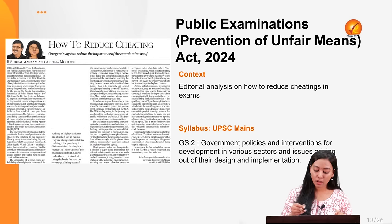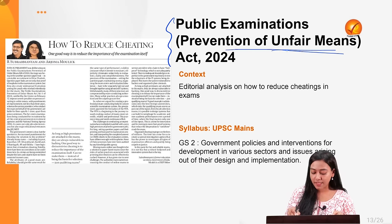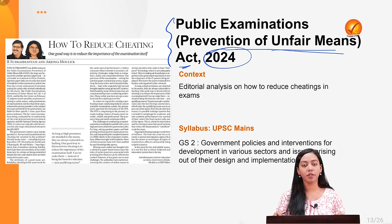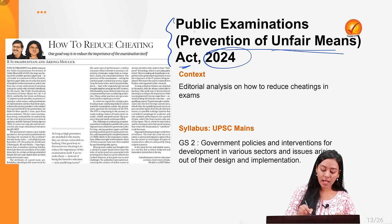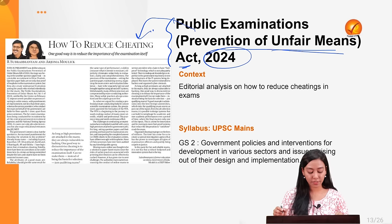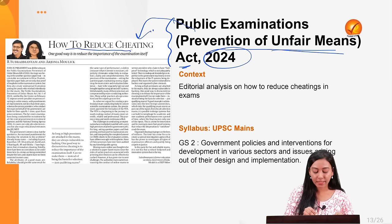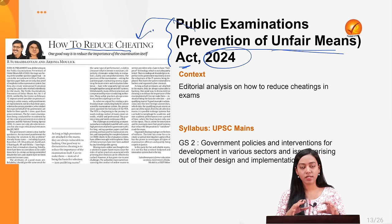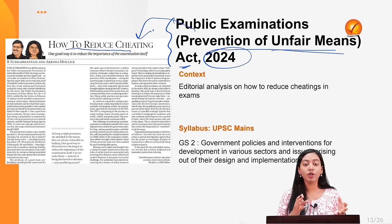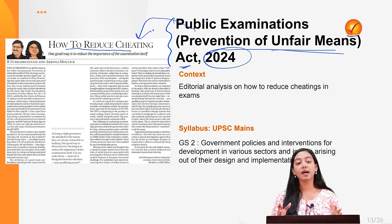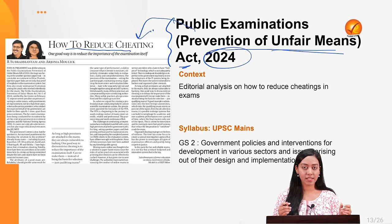Moving to our third topic: the Public Examinations (Prevention of Unfair Means) Act, which came into effect on 12th February 2024. This editorial from the Indian Express discusses how to reduce cheating in public examinations. The act is a model legislation put forward by the central government to enhance transparency, fairness, and trust in public examinations, coming in the context of revelations of high instances of paper leaking over the last five years.